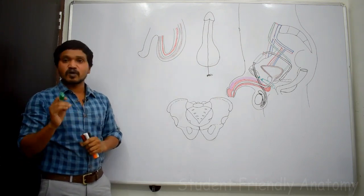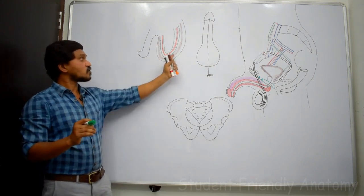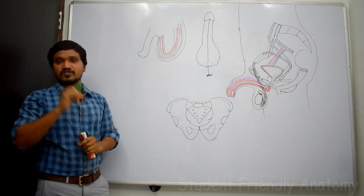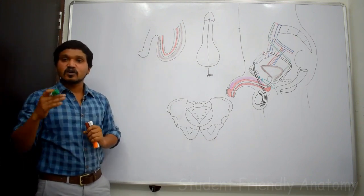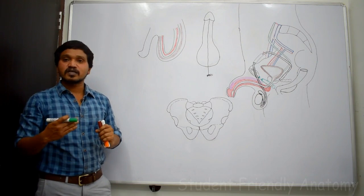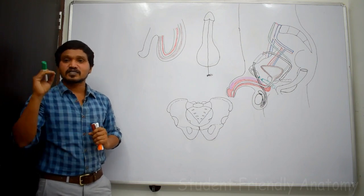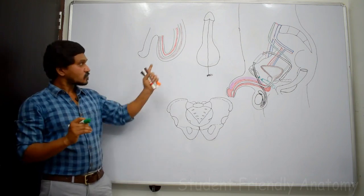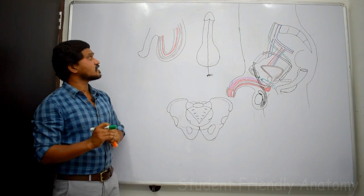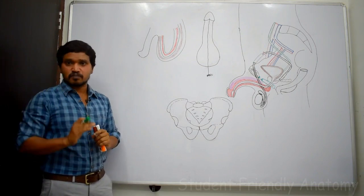If you want to be very specific, you can find one more layer after the dartos muscle — that is Colles' fascia. Colles' fascia in the abdomen is continuous as Scarpa's fascia. These are the different layers which are present in the scrotum.